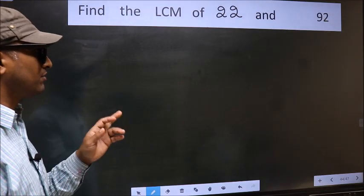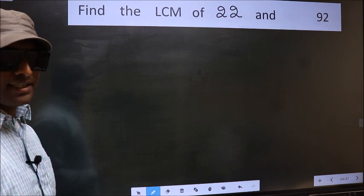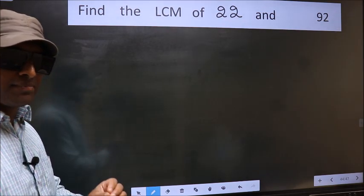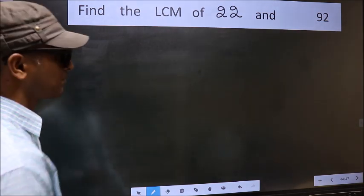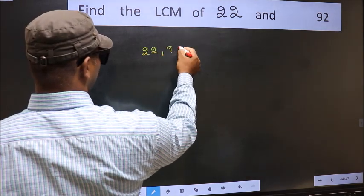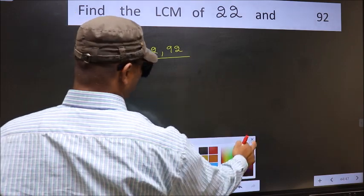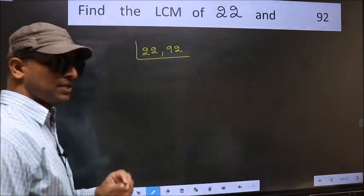Find the LCM of 22 and 92. To find the LCM, first we should frame it in this way: 22, 92. This is our step 1.